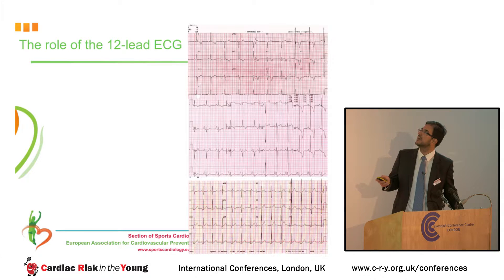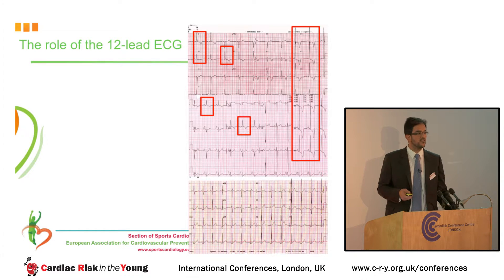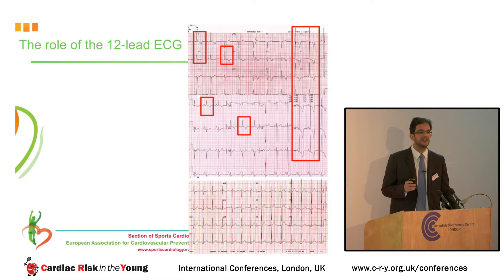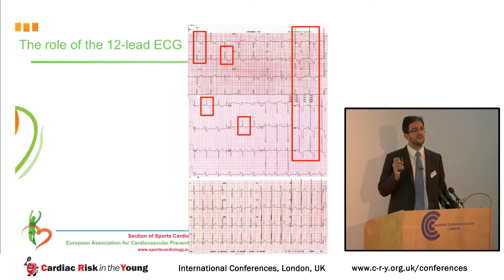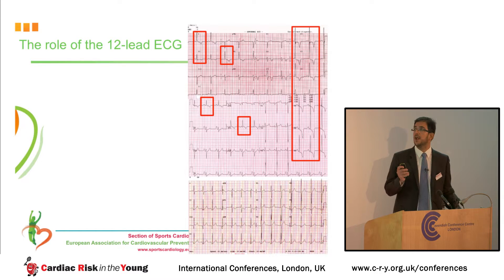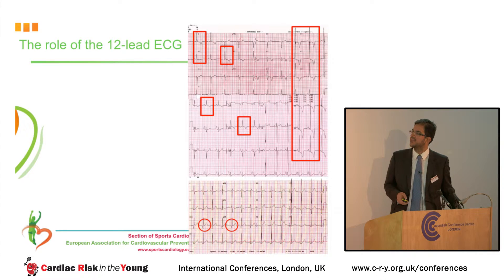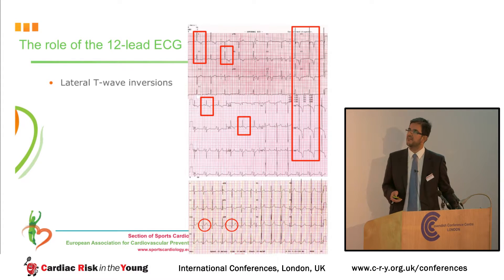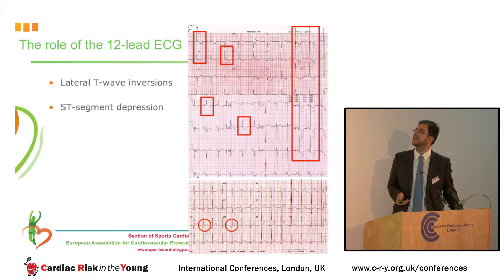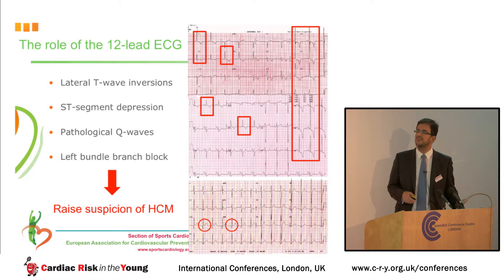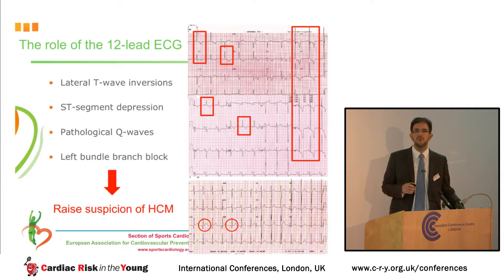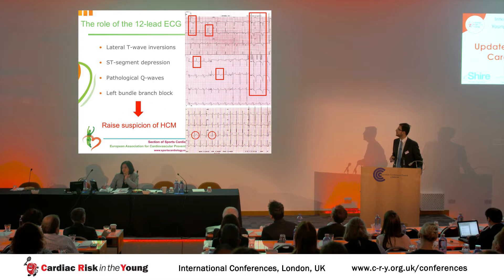Let's talk about the 12-lead ECG. Here you can see features such as deep T-wave inversions, particularly in the inferolateral leads. T-wave inversions in the lateral leads are malignant or sinister until proven otherwise — that's a very important point, because even if initial investigations are negative, if your athlete has deep T-wave inversions in the lateral leads, you will need to follow them up regularly. Other features highlighted include pathological Q-waves, ST-segment depression, and left bundle branch block — these are not features of athletic adaptation and should be investigated comprehensively.